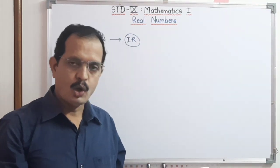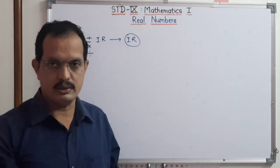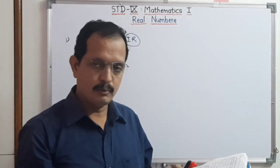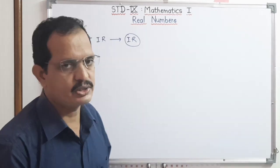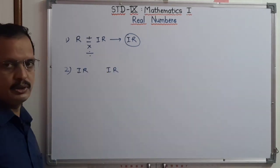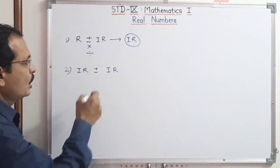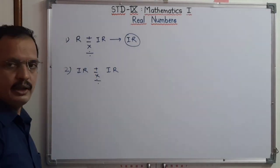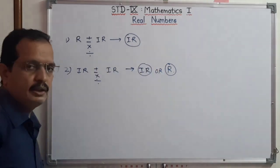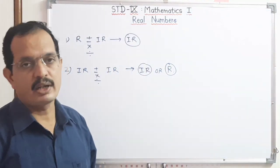The third property: addition, subtraction, multiplication, and division of two irrational numbers can be either a rational number or an irrational number. That means if we take one irrational number and another irrational number, and we add, subtract, multiply, or divide these two numbers, then the final answer may be an irrational number or it may be a rational number.